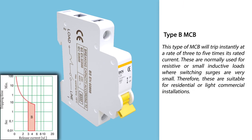Type B miniature circuit breaker: this type will trip instantly at a rate of three to five times its rated current. These are normally used for resistive or small inductive loads where switching surges are very small. Therefore, these are suitable for residential or light commercial installations.